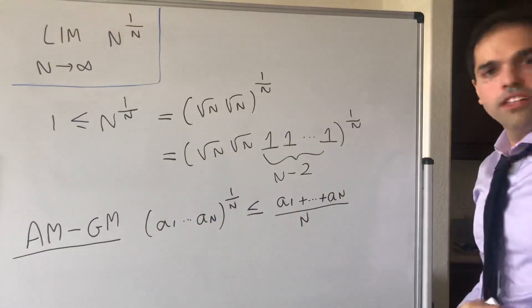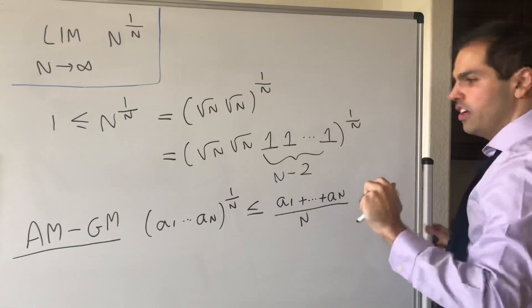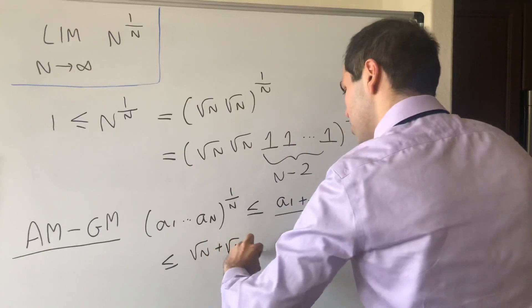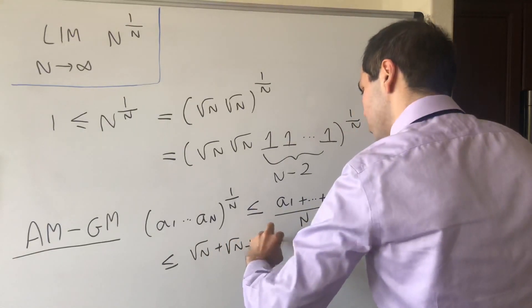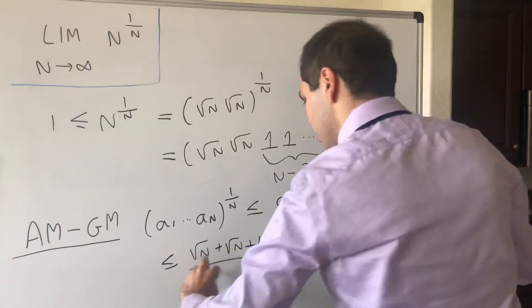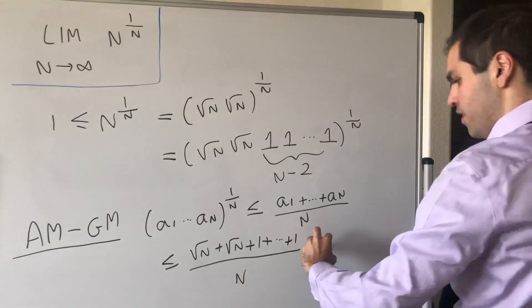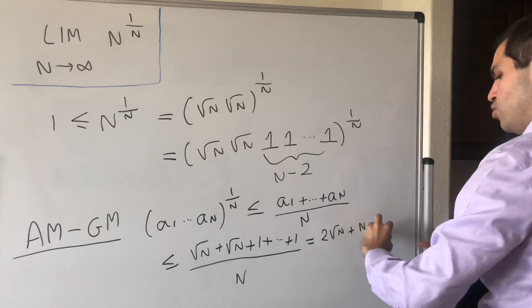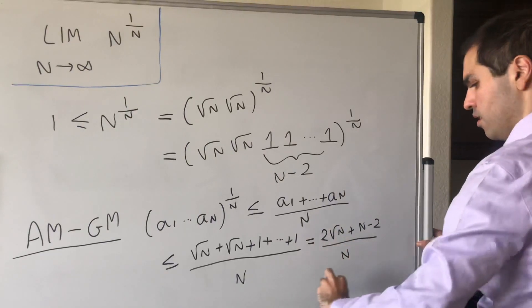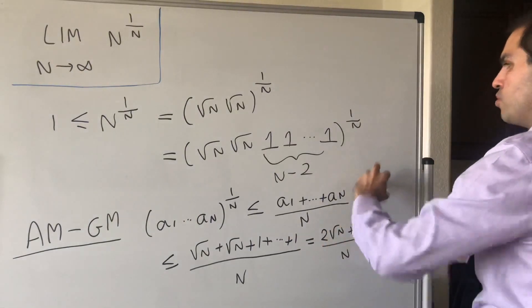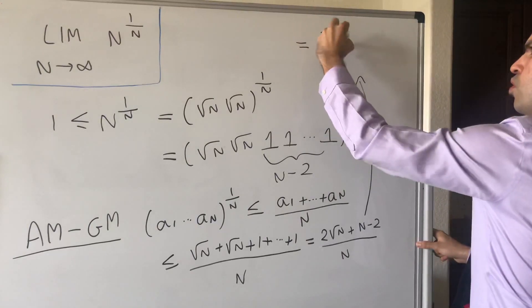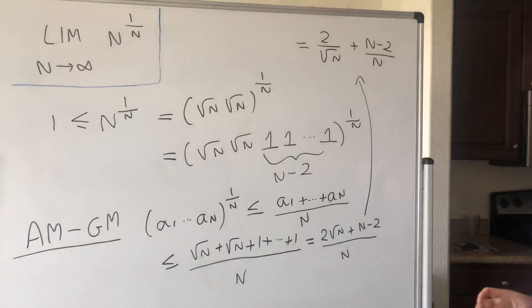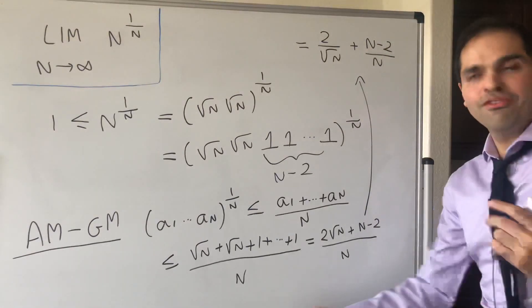In particular, let's see what this becomes. This tells you that this product is less than or equal to (square root of n + square root of n + 1 + 1 + ... + 1, n minus 2 times) divided by n, which becomes (2 times square root of n + n minus 2) over n, or equivalently 2 over square root of n plus (n minus 2) over n.